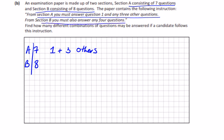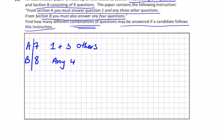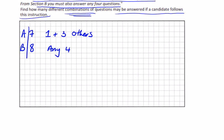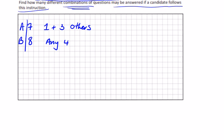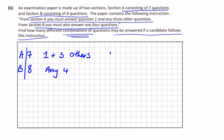Section B, you can do any four, you must answer any four. So any four from eight. How many different combinations must be answered if a candidate follows this instruction? So one plus three others, so one and any three others. So that's one multiplied by three from six for A, and that's equal to six by five by four. So the six and the three-two-one in the bottom cancel, so that's equal to 20. There's 20 options there.